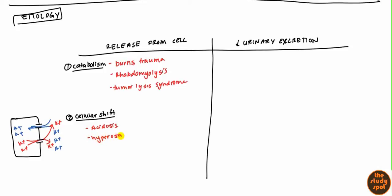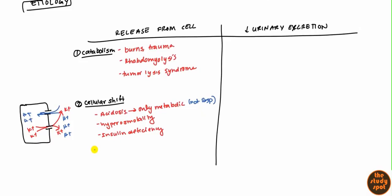Another cause of cellular shift is hyperosmolality — more osmotic molecules in the bloodstream push potassium out. Insulin deficiency also contributes, since insulin normally pushes potassium in; without it, there's nothing keeping potassium inside the cell. Quick note: in acidosis, it's only metabolic acidosis — not respiratory acidosis. Respiratory acidosis will not cause hyperkalemia; only metabolic acidosis will.